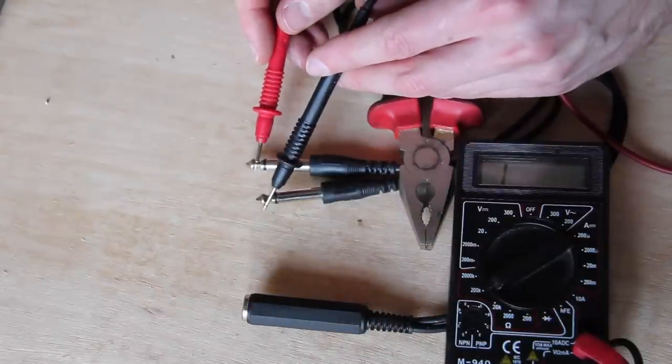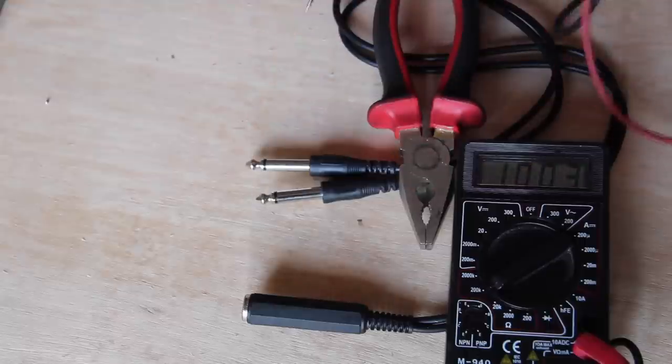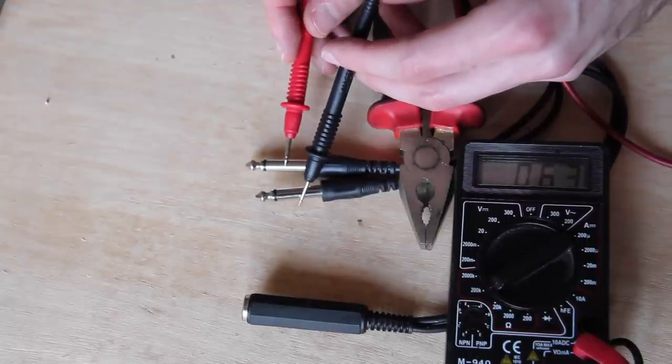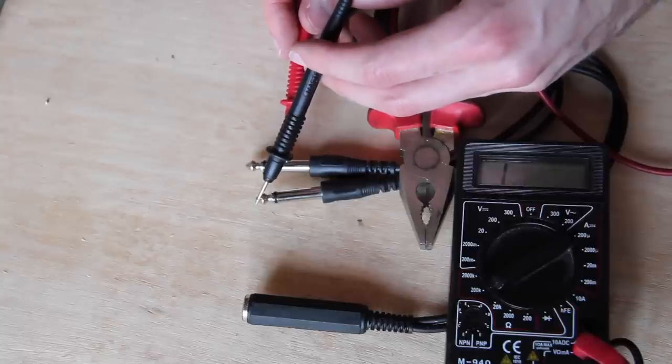We use the multimeter again before testing the cable on the drum kit. The setup is the same. We are measuring the resistor. The cable is working if the resistance of 100 kilo ohm is only showing by touching the two tips.